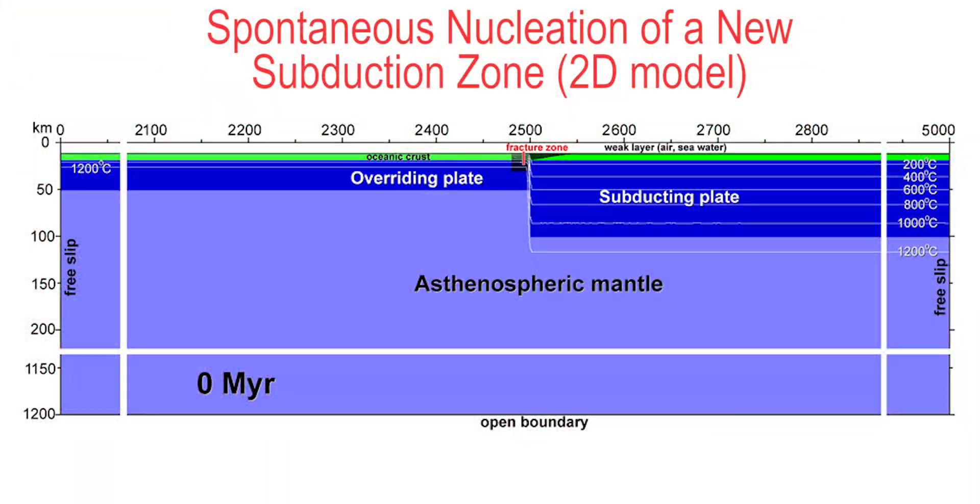In this video, we show one way that a new subduction zone can form when dense oceanic lithosphere sinks adjacent to a major lithospheric weakness such as a transform fault or fracture zone. We show the results of a two-dimensional computer model generated by Professor Taras Gerya's group at ETH Zurich in Switzerland.